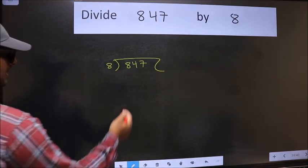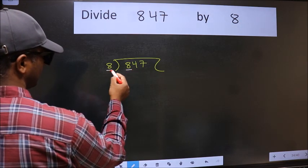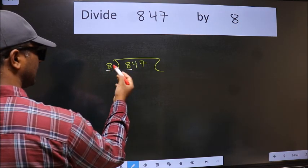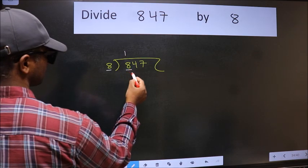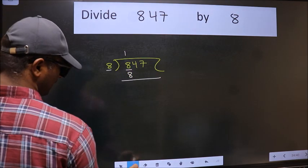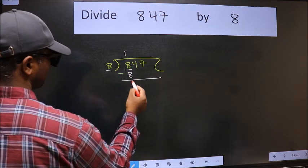Next. Here we have 8 and 8 here. When do we get 8 in 8 table? 8 once 8. Now we should subtract. We get 0.